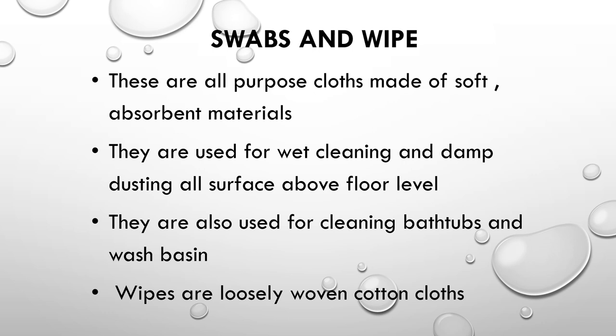Swabs and wipes are all-purpose cloths made of soft absorbent material, used for wet cleaning and damp dusting of all surfaces above floor level. They are also used for cleaning sanitary fittings such as bathtubs and washbasins. Wipes include loosely woven or knitted cotton cloths and non-woven cloths. Synthetic sponges may also be grouped under this category and are available in various sizes and shapes. Sponges are better than other cloths for washing walls, glass, woodwork, and upholstery.